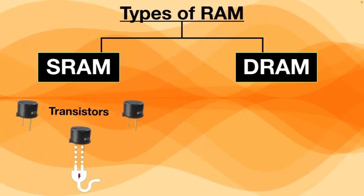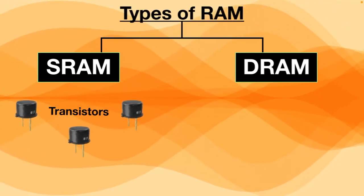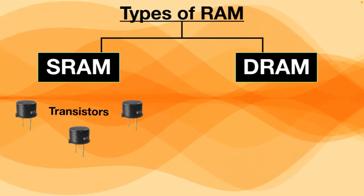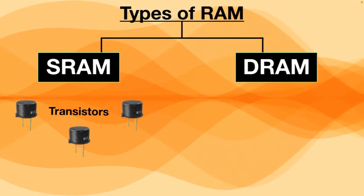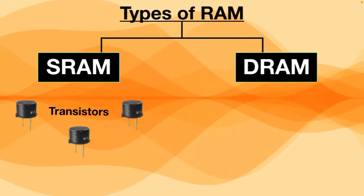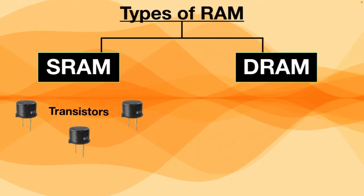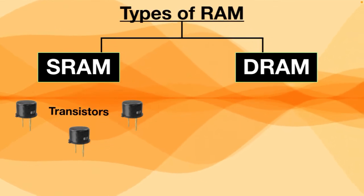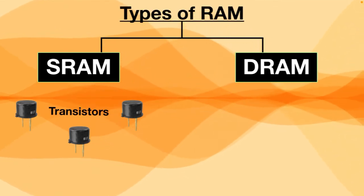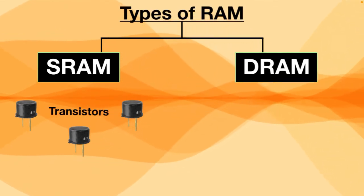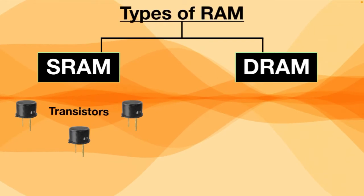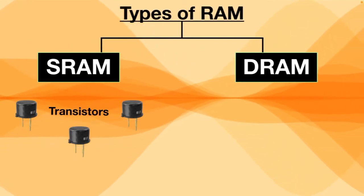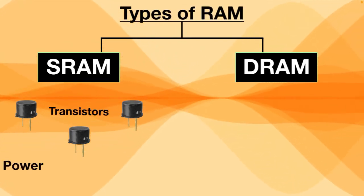That's why it's called static — because it doesn't need to be refreshed. SRAM is used in cache memories, like the small files your CPU accesses all the time. The benefit of using SRAM is that it uses less power and data can be accessed more quickly.